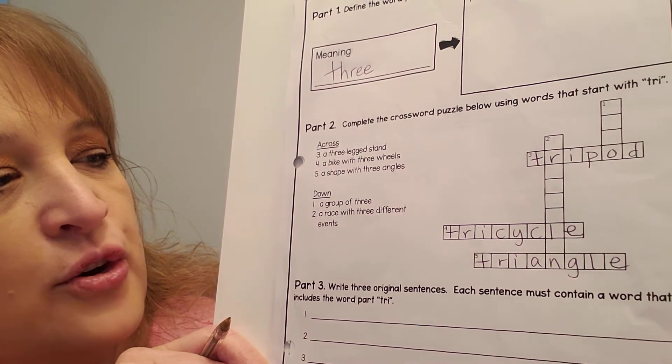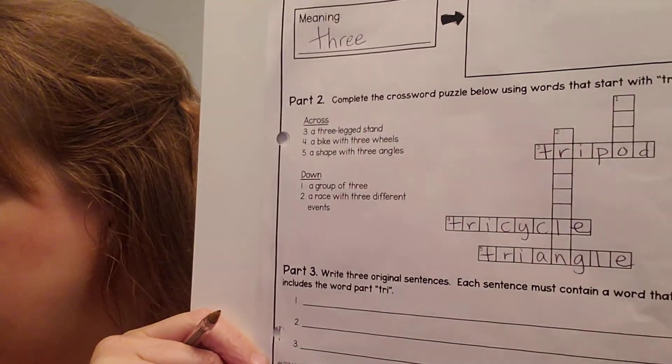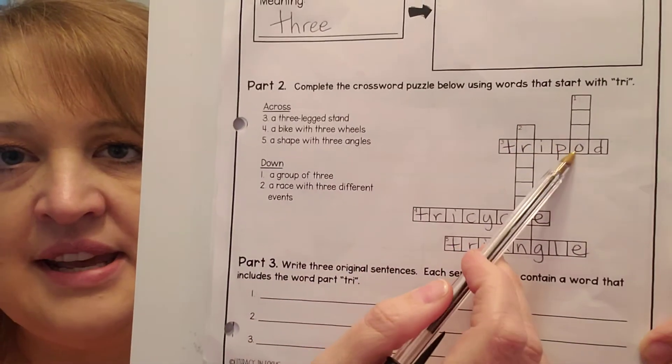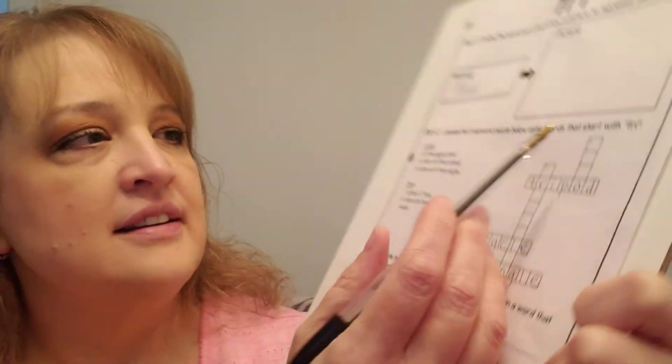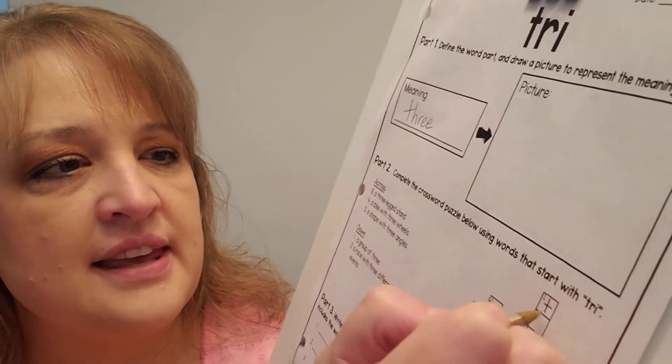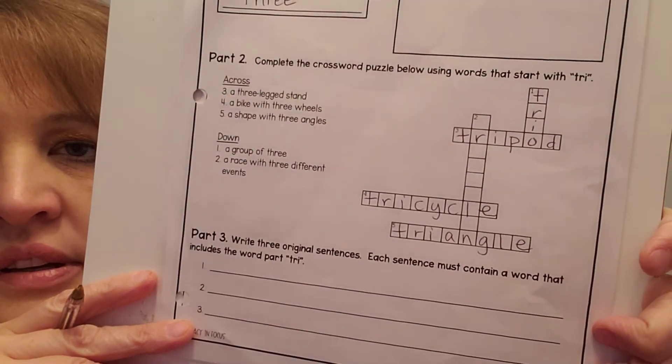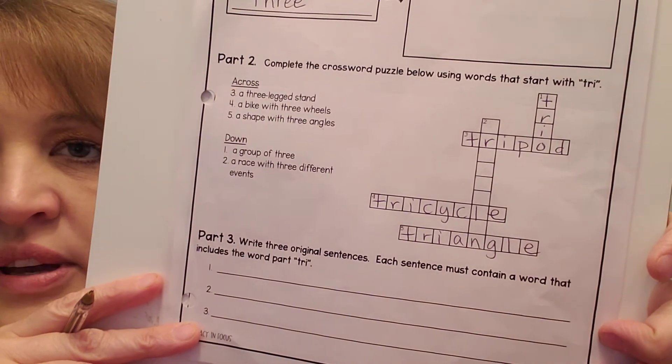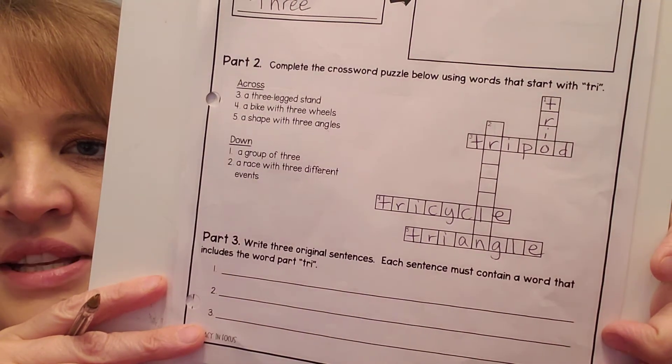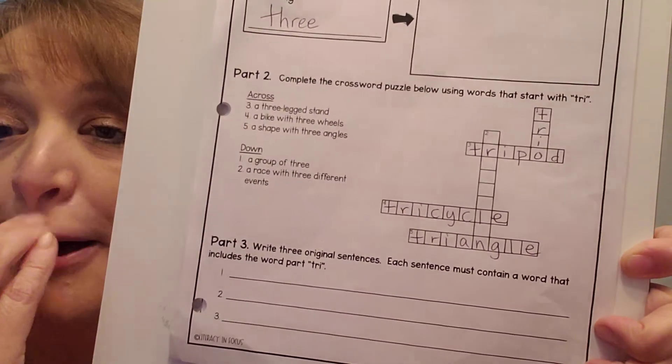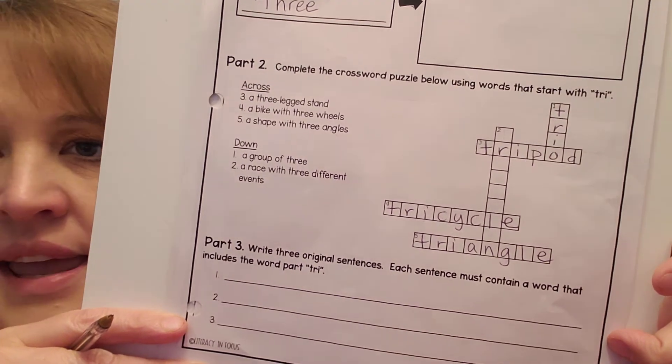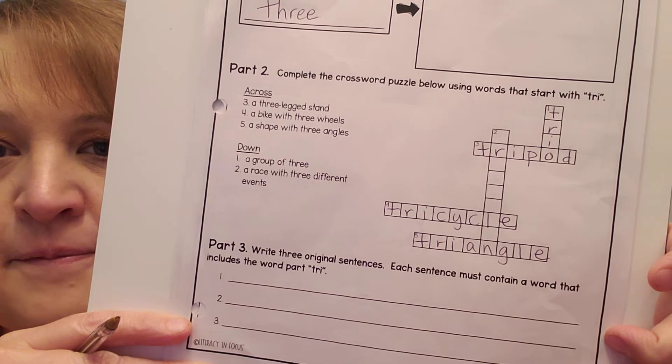All right, one down. A group of three. Well, when you have a group of three, and we know it ends in O, and it has to have tri in it, we would say it's a trio. A trio is a group of three. You might be in a trio if you're in a singing group. There might be three of you that sing together. Or maybe you have two friends that you hang out with. You might be a trio. Three kids hanging out together. A group of three.